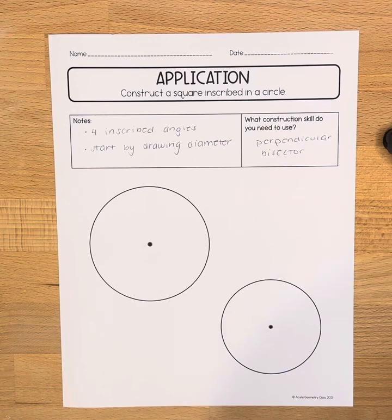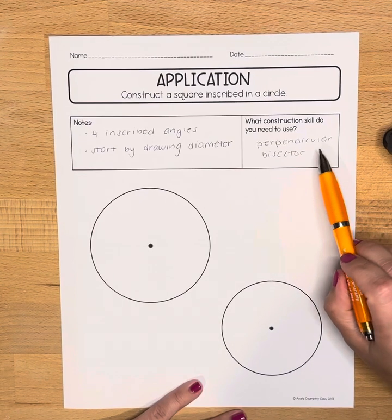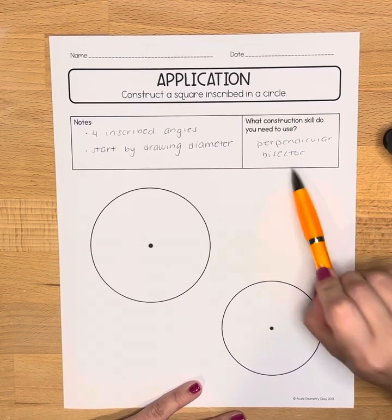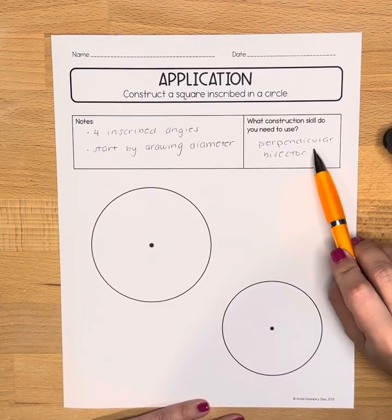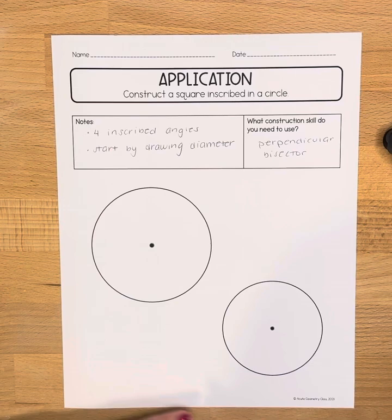We're going to start this process by drawing the diameter and this is an application of the perpendicular bisector construction. If you forget how to do that you can go and find that video within this playlist.